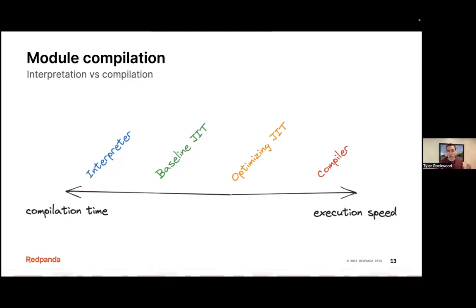There are WebAssembly runtimes on this full spectrum, and some individual runtimes implement multiple tiers — an interpreter that runs and then you can upgrade functions to a baseline JIT or even an optimizing JIT. Some VMs just use ahead-of-time compilation to squeeze out all the performance during runtime. This is a similar model to the JVM, which has an interpreter, then the C1 baseline compiler and C2 optimizing compiler. When integrating WebAssembly into a live system, you've got to work through your use case and trade-offs to pick the right runtime. There are a variety of different runtimes out there to help you choose.